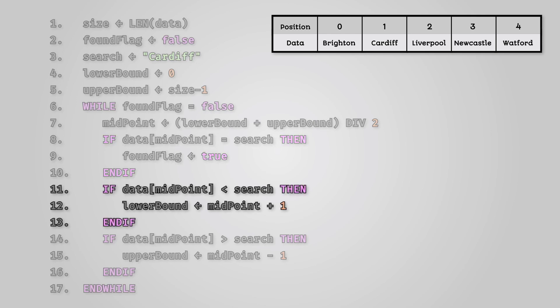The next section of code asks whether the data at the midpoint is less than what we're searching for. If it is then we set the lower boundary one to the right of the midpoint. The following section of code instead asks whether the data at the midpoint is greater than what we're searching for. If it is then we can set the upper boundary one to the left of the midpoint.